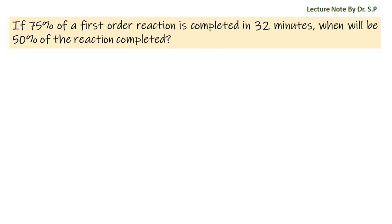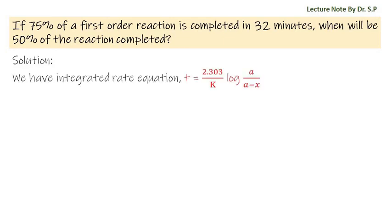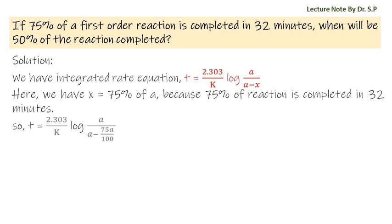We have a question: if 75% of a first order reaction is completed in 32 minutes, when will 50% of the reaction be completed? Solution: We have the integrated rate equation, t is equal to 2.303 by k times log a by (a minus x). Here, x is equal to 75% of a, because 75% of the reaction is completed in 32 minutes.